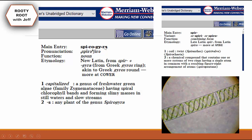Spirogyra is a genus of freshwater green algae. The reason it has -gyra, or gyro, is that it has spiral chlorophyll bands, and spirals are circle-like. Spiro also means coil or twist — so, just cool. Here's a picture.